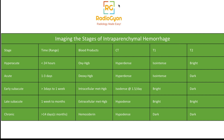In the chronic stage, all that remains is ferritin and hemosiderin, which appear hypointense on both T1 and T2. On GRE, there will be blooming with heterogeneous appearance. On diffusion, the imaging appearance can vary — importantly, a subacute bleed can show restricted diffusion and often peripheral enhancement, which can mimic a mass lesion.